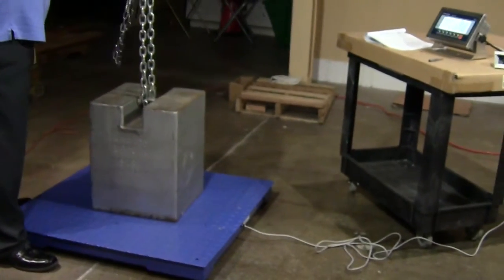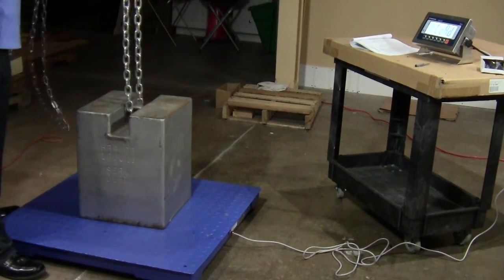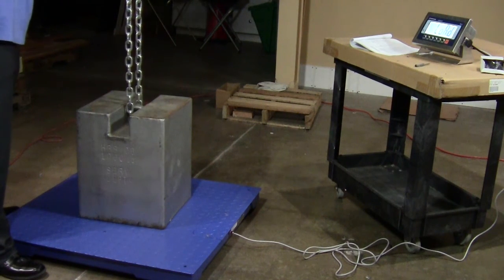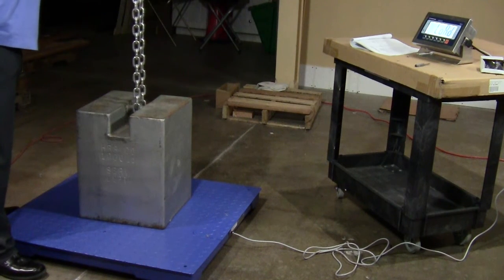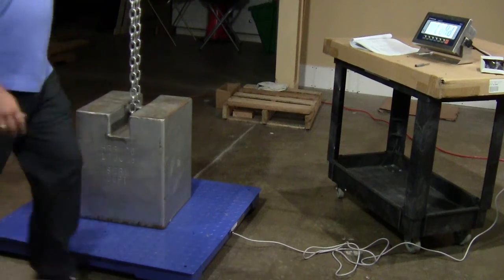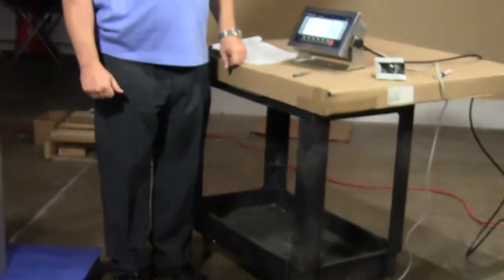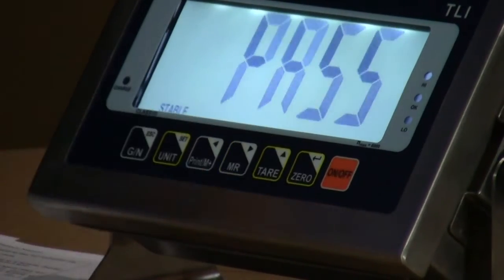After the weight is loaded, we're going to make sure it's loose. The chain does not touch. We loaded the weight to the platform. Stable light is on. We press the enter button.